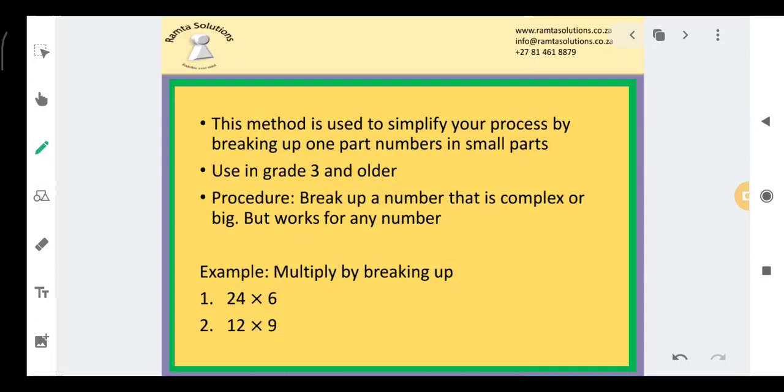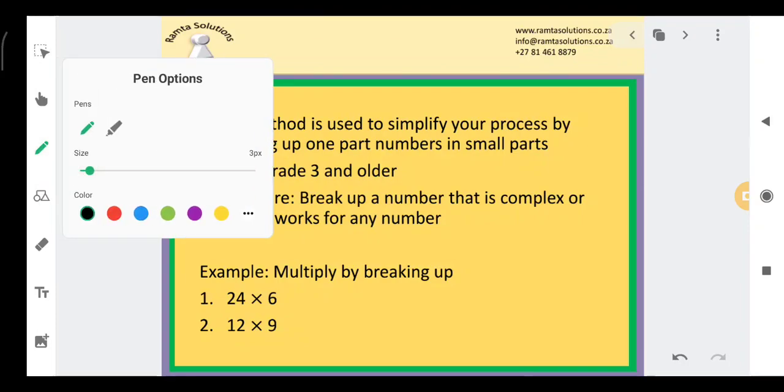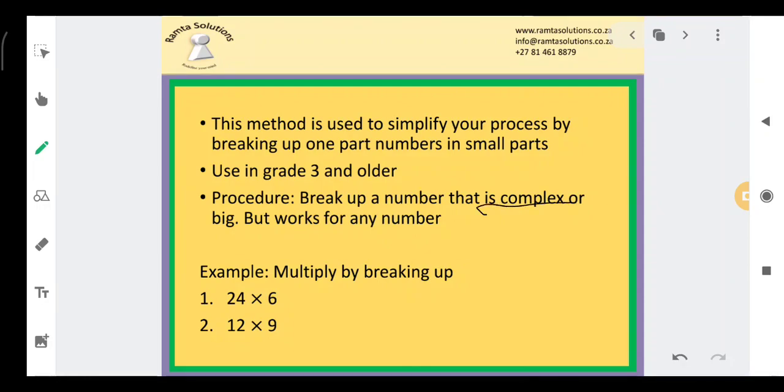This method is about breaking up a part of your numbers into very small parts. The procedure is simple in the manner that you need to break up a number that is complex or big. However, this works for any number. You just need to choose which number of the multiplicand or the multiplier you're breaking up in a manner that will make it easier for you to calculate.